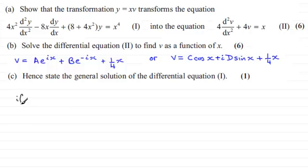We've got that if y equals x times v, the transformation we were given here, then rearranging this for v, v would be equal to y divided by x.